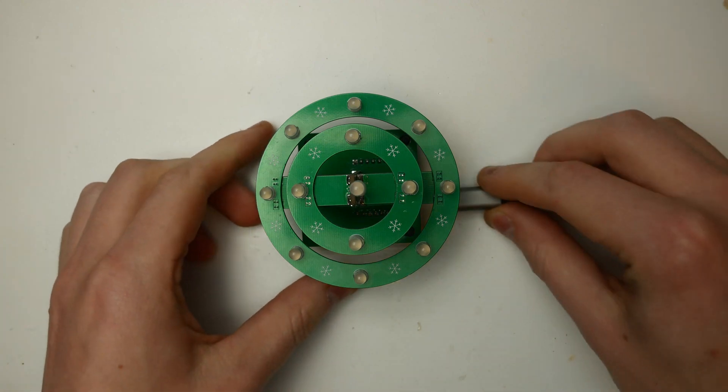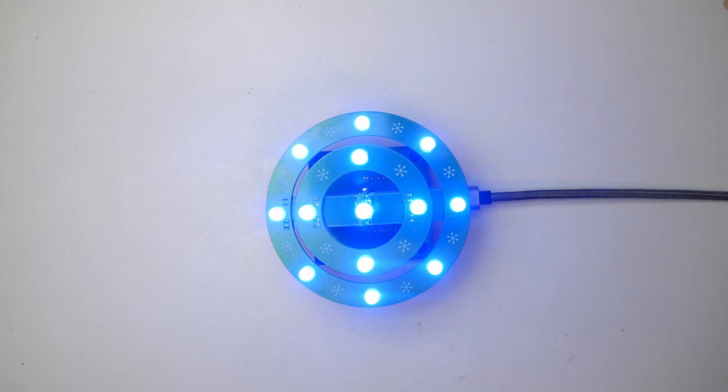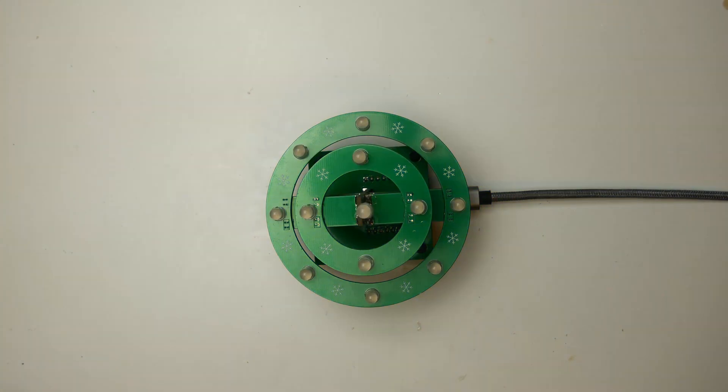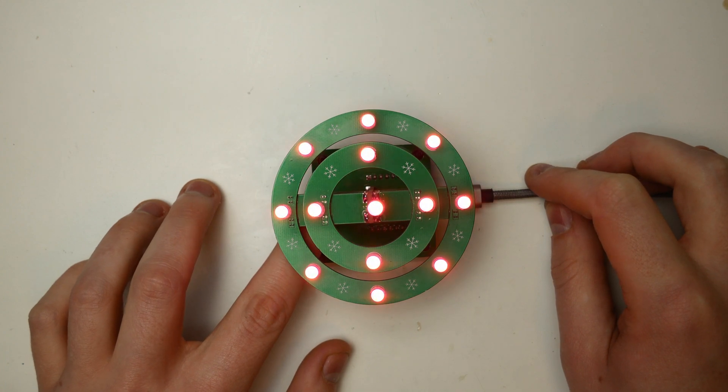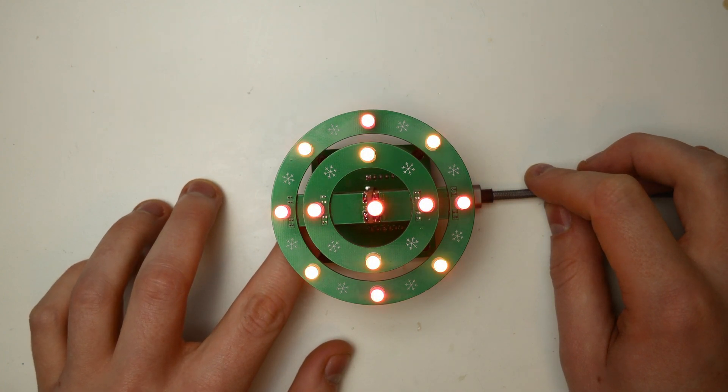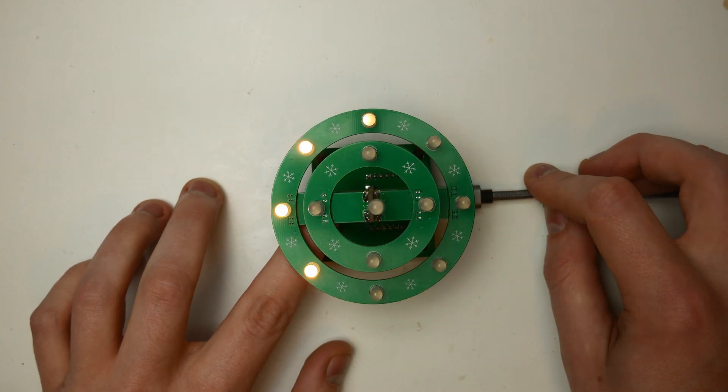The tree is almost finished. Now you only have to install the software. You can find detailed instructions on the GitHub page. The link is of course in the description. With the button you can change the effects and settings. In the initial state the tree is off. With a click you can change the effect and turn it on. With a double click you can change the speed.